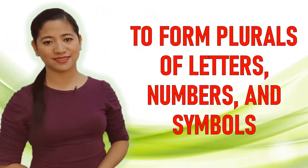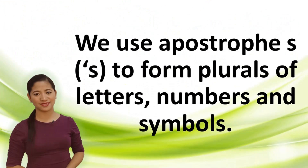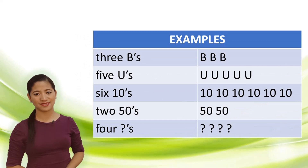To form plurals of letters, numbers and symbols, we use apostrophe S. Examples: three B's, five B's, 6 tenths, 2 fifties, 4 question marks.